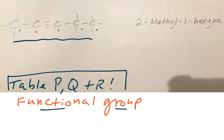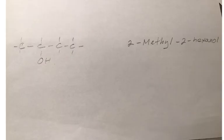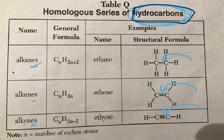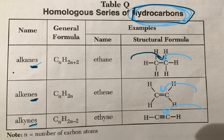We notice it's only carbons and hydrogens in this guy, so this guy is a hydrocarbon. We have three types of hydrocarbons: alkanes, alkenes, and alkynes. We notice alkanes have single bonds, alkenes have double bonds, and alkynes have triple bonds.